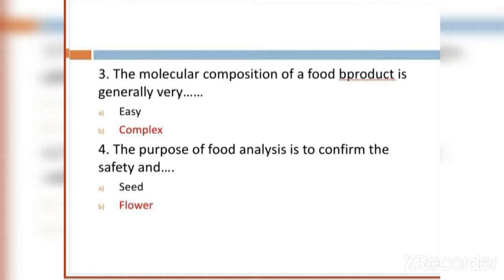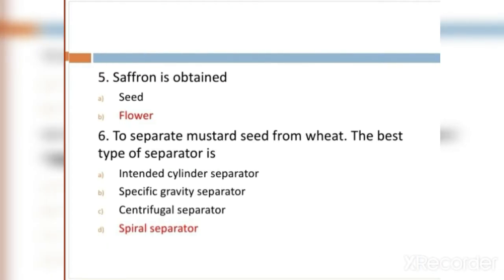MCQ 4: The purpose of food analysis is to confirm the safety and _____. Options: seed and flower. The right answer is seed. MCQ 5: Saffron is obtained from seed and flower. The right answer is flower.